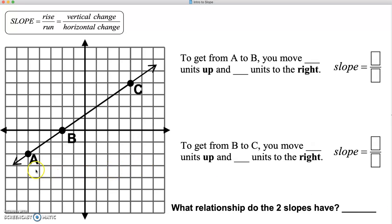All right, so looking at this example here, we have points a, b, and c plotted on this continuous line. We're going to find the slope, which is equal to the rise over run, or the vertical change over the horizontal change. So to get from a to b, we would have to move up 2, to the right 3. So we would move 2 units up, 3 units to the right.